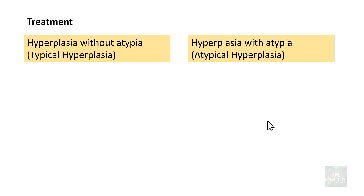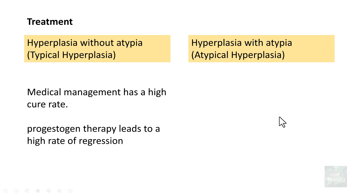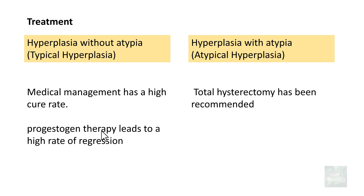Regarding treatment: hyperplasia without atypia is usually treated by medical management, particularly progestogen therapy, which leads to a higher rate of regression of the endometrial hyperplastic glands. Atypical hyperplasia, however, has total hysterectomy recommended, because approximately 50% of cases may have foci of endometrial adenocarcinoma, particularly endometrioid type. The hysterectomy specimen is then evaluated thoroughly to rule out any foci of adenocarcinoma.